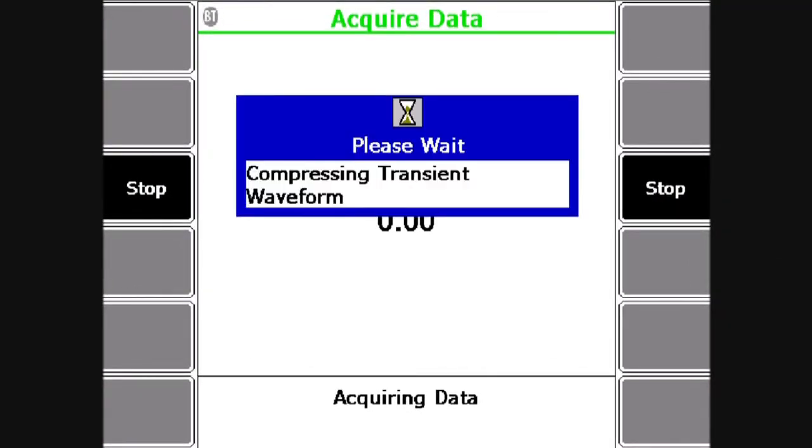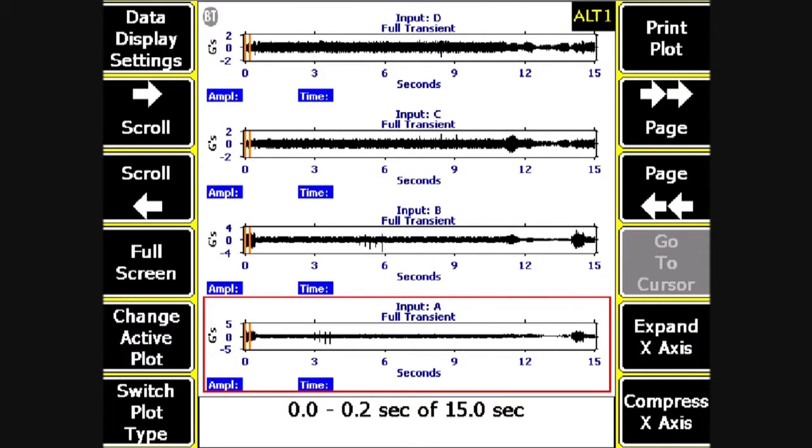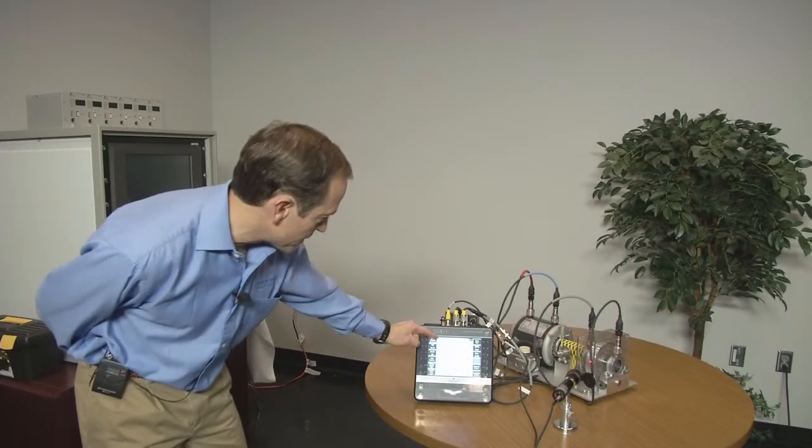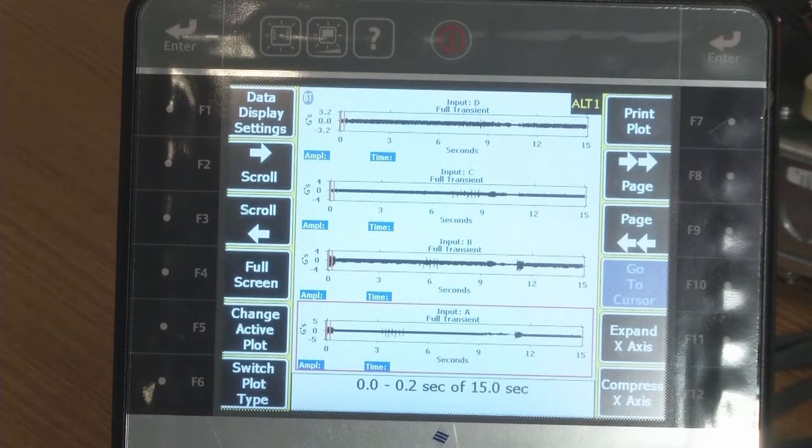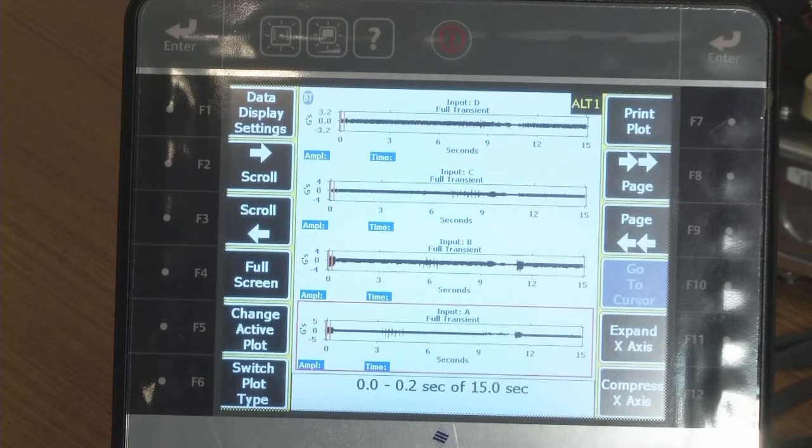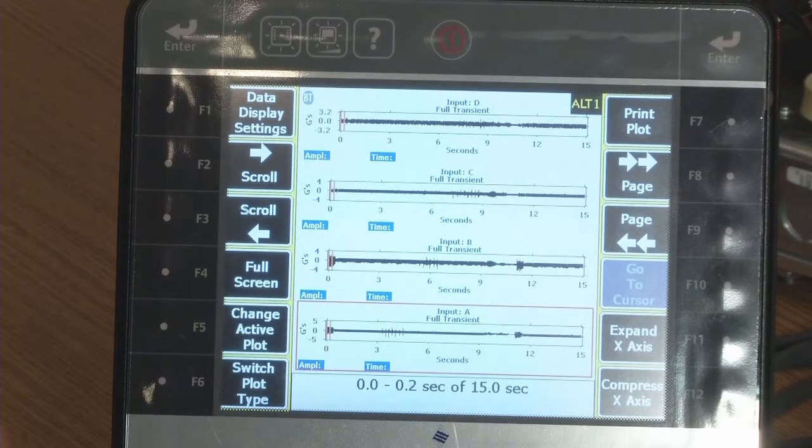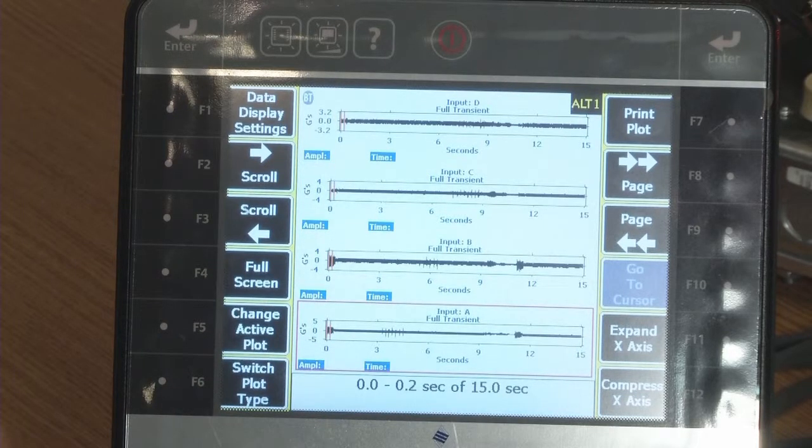Over that 15 seconds, we've just collected data on all four channels simultaneously, and the result is I can see all 15 seconds for each waveform. On the transient channel A, where these high peaks are, this is exactly where the impacts were. You can see where the amplitude goes to zero, and that is where we turned the machine off and then started the machine back up again.